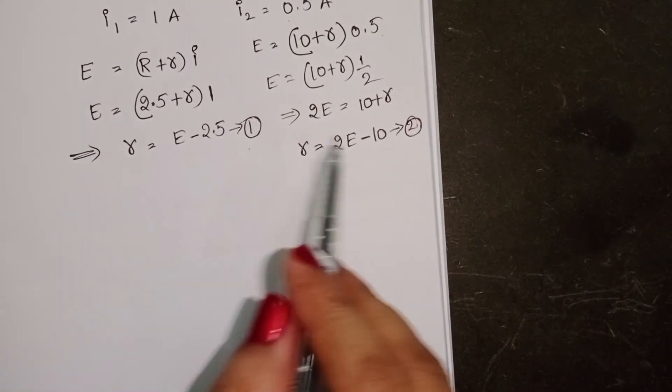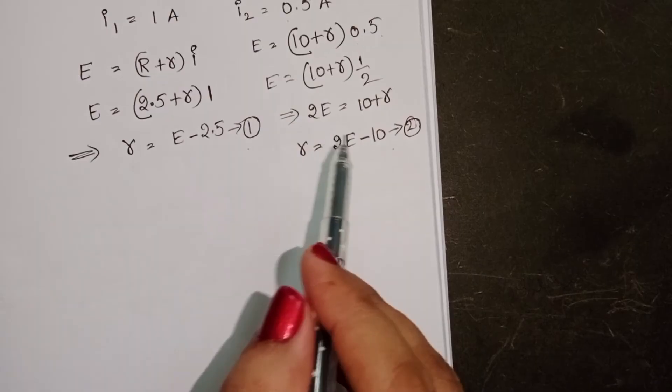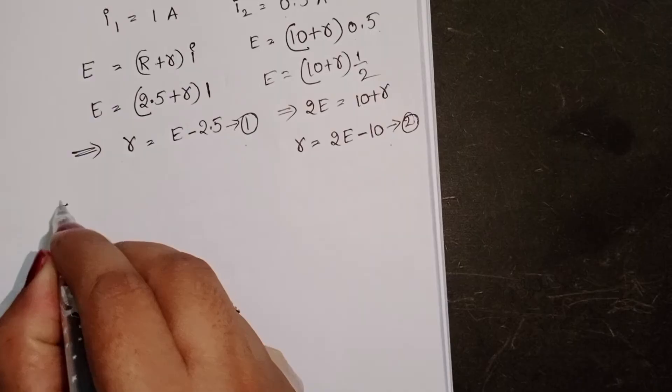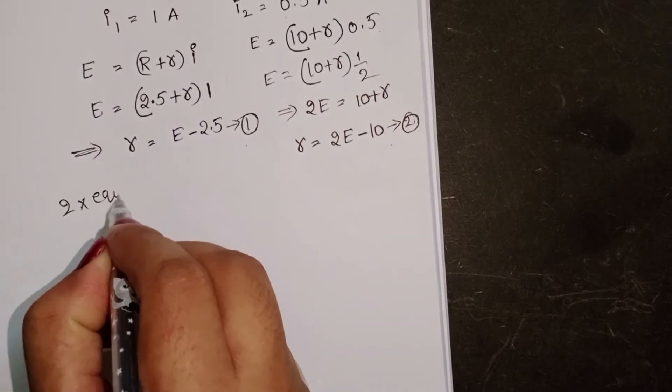Simplify equation 1 and equation 2. For the simplification, multiply equation 1 with 2, 2 into equation 1.